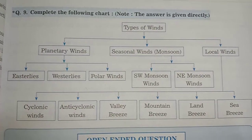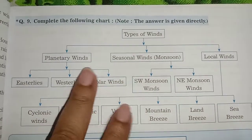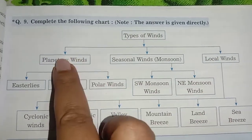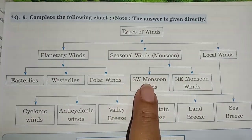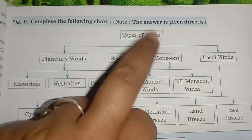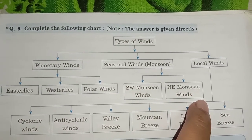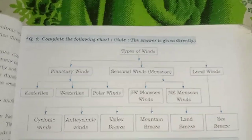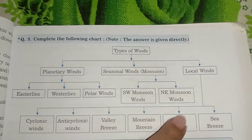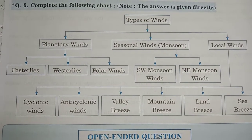Now complete the tree of wind chart in your notebook. Types of wind — there are three types. First, planetary wind, which includes trade winds, westerlies, and polar wind. Second, seasonal wind, which includes south west monsoon wind and north east monsoon wind. Third, local wind, which includes cyclonic wind, anti-cyclonic wind, valley breeze, mountain breeze, land breeze, and sea breeze.